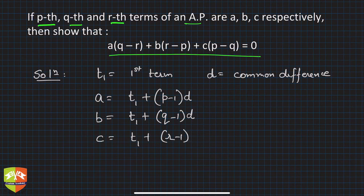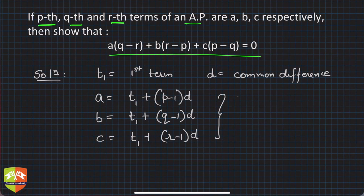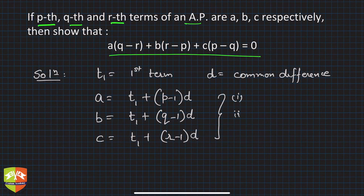So if you have managed to get these three equations - let's say equation 1, 2, and 3 - then your job is kind of done. Now let's try and find out q minus r.